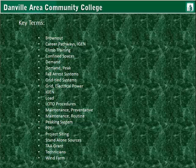Key terms from the glossary: brownouts — when voltage is decreased due to large demand somewhere. Career pathways, climb training and its importance, working in confined spaces, electrical demand, peak demand — peak being when demand is at maximum and requires peaking generators or other devices to assist. Fall arrest systems, grid-tied systems, what is a load, and lockout/tagout procedures or LOTO. Preventative maintenance, routine maintenance, peaking systems, personal protective equipment or PPE, project siting, standalone sources, technicians, and wind farm.